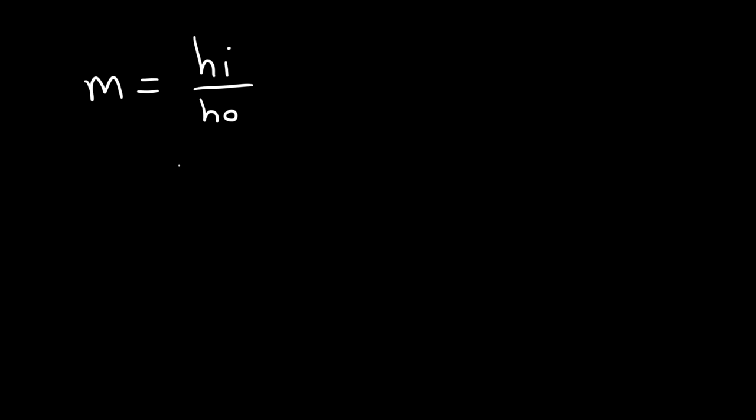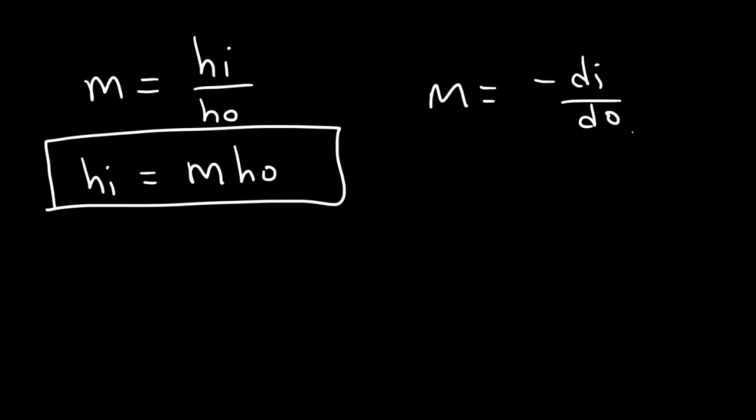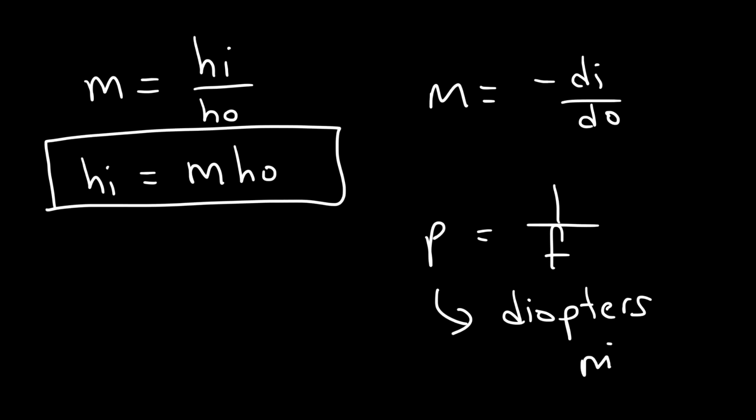The magnification equals HI divided by HO, so the image height is the magnification times the height of the object. The magnification is also equal to negative DI over DO. If you need to calculate the power of the lens, it's equal to 1/F, measured in diopters — which is meters to the minus 1. So if you have the focal length in centimeters, you need to convert it to meters.